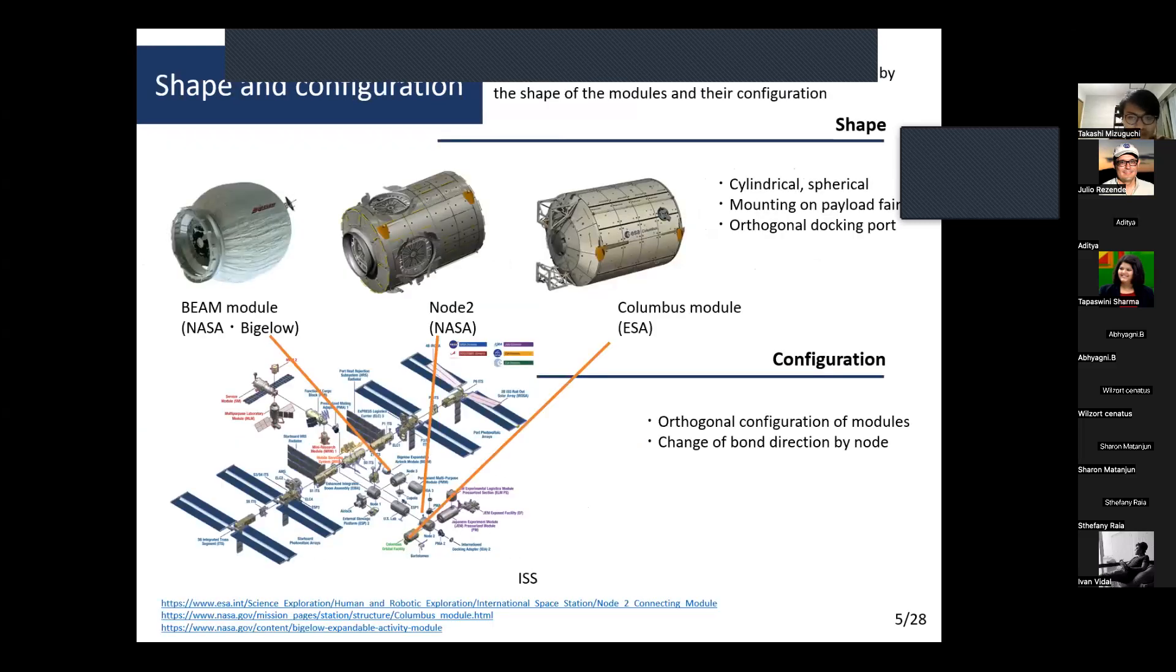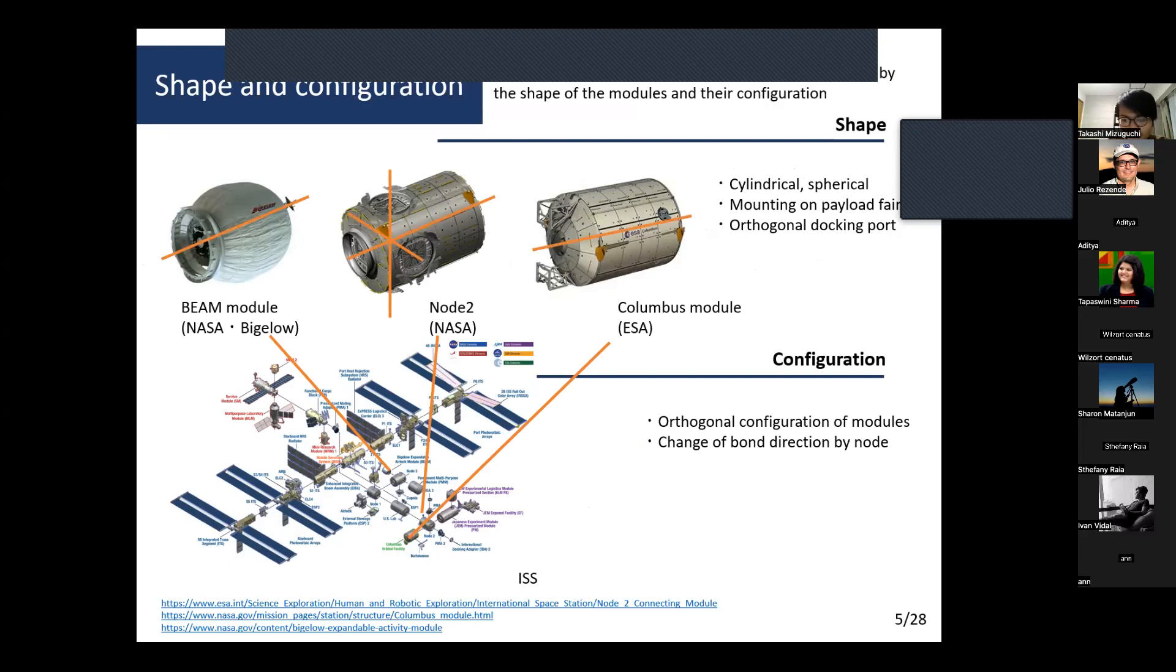Modular coordination is established by modular shapes and configuration. For example, shape could be cylindrical or spherical at the bounding parallel plane. There are also docking ports, and configuration includes orthogonal configuration of modules that change band direction by node modules.